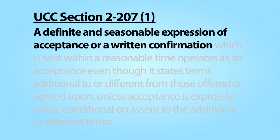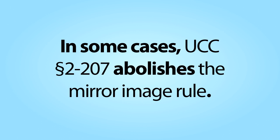Whether there is an offer on the table is determined by the common law rules we have already considered. Assuming an offer has been made, if the offeree manifests timely assent to the offer — referred to as a definite and seasonable expression of acceptance — a contract will be created even though that acceptance contains additional or different terms not found in the offer. Whether these additional or different terms become part of the contract is determined by Section 2-207 subsection 2, which we will consider in the next module. What is clear is that this section of the UCC abolishes the mirror-image rule, at least in some cases.